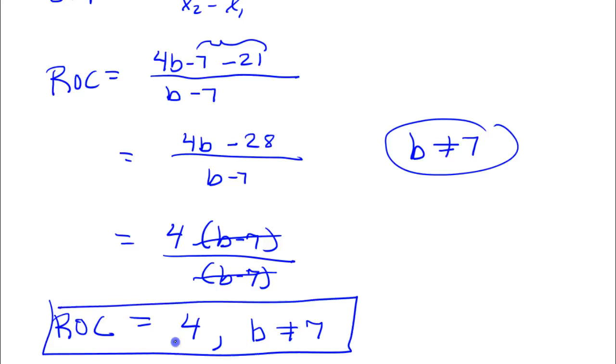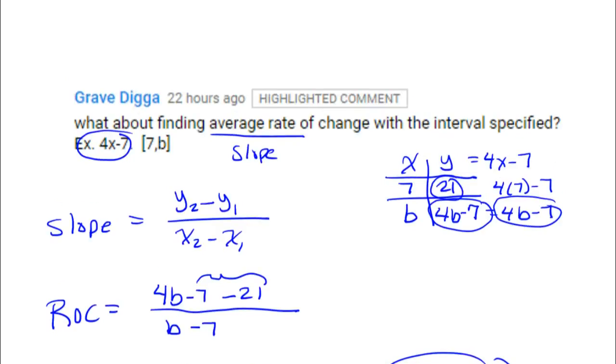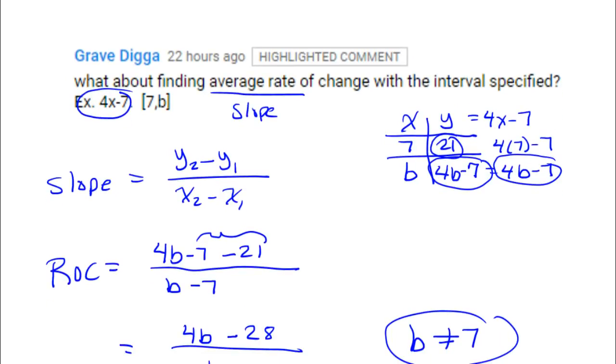So that was kind of fun. Well, then that's it. Rate of change is 4, as long as b does not equal 7. Thanks for the question, Gravedigger. That was fun.